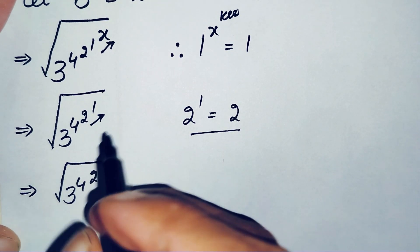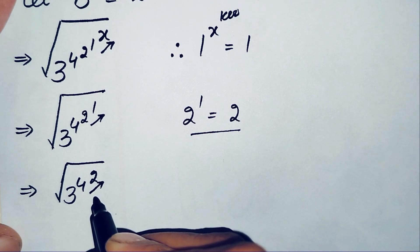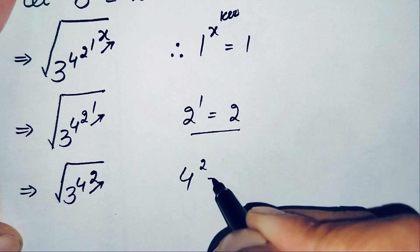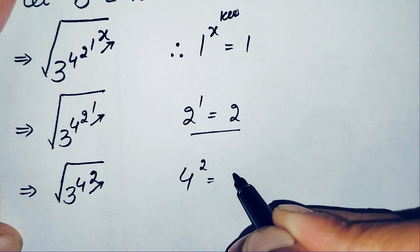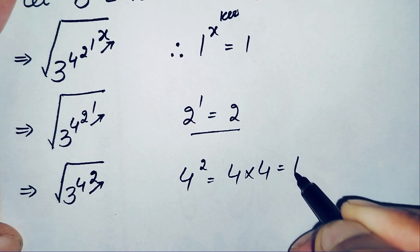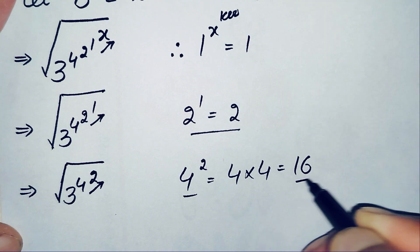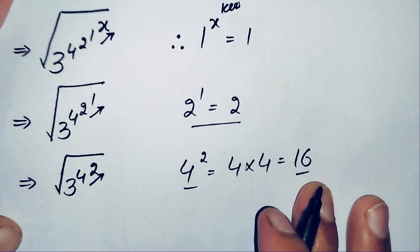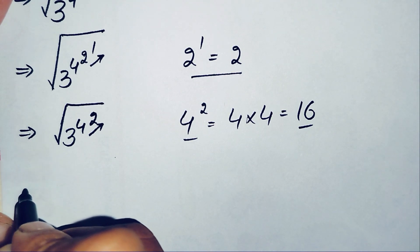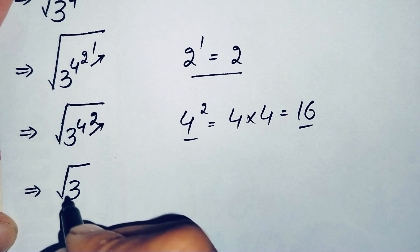This becomes: square root of 3 raised to power 4, raised to power 2. Now we find the value of 4 raised to power 2. This means we multiply 4 two times: 4 times 4 is 16. So 4 raised to power 2, or 4 squared, is 16. We replace the power 4 raised to power 2 with 16, giving us: square root of 3 raised to power 16.